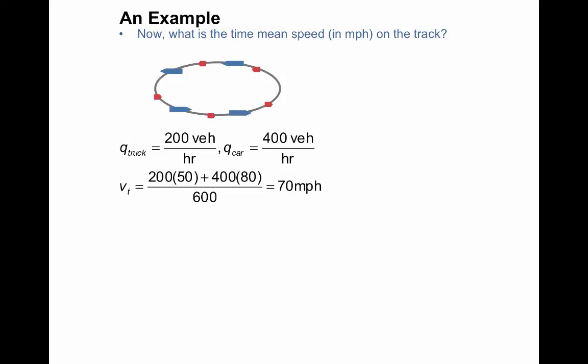So let us calculate that, the time-mean speed. You remember that the truck flow is 200, the car flow is 400. So we use the ratio of the flows in order to calculate the speed. So it's 200 vehicles per hour times the speed of trucks, 50, plus 400, which is the car flow, times the car speed of 80, divided by the total flow. So we get 70 miles per hour, which indeed is higher than the space-mean speed.